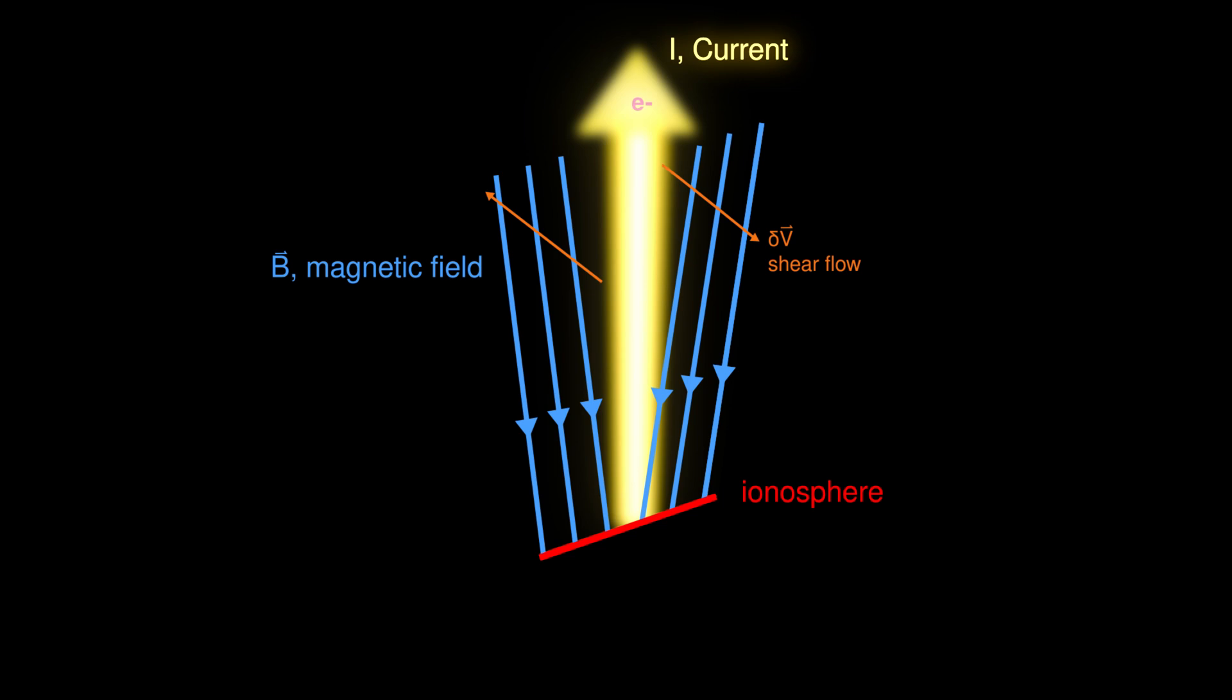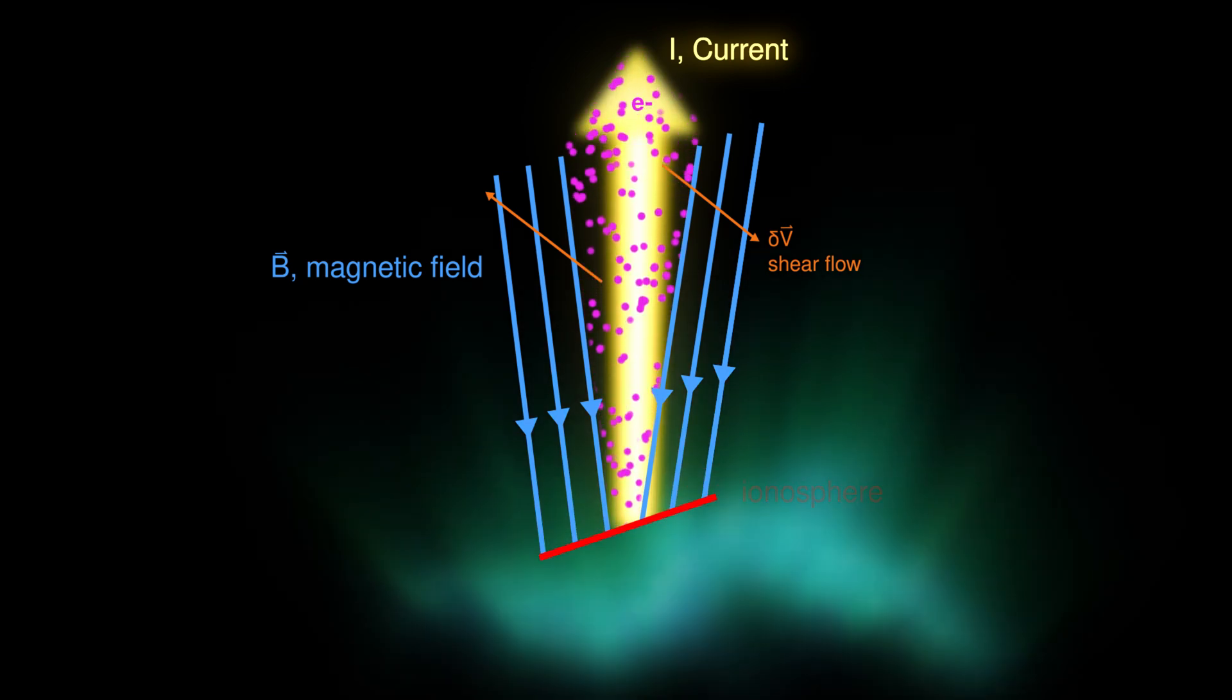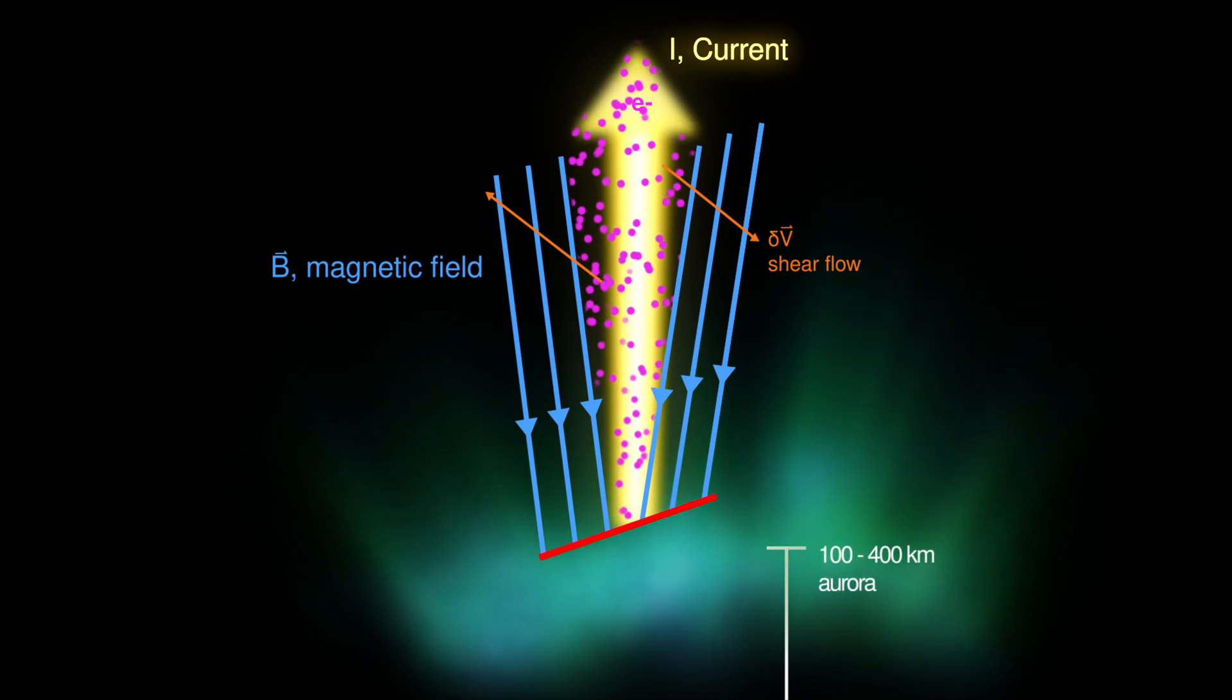Hosting the upward-pointing current that actually consists of negatively charged energetic electrons that precipitate into the ionosphere, exciting nearby atoms that later radiate light, forming aurorae at altitudes from 100 to 400 kilometers.